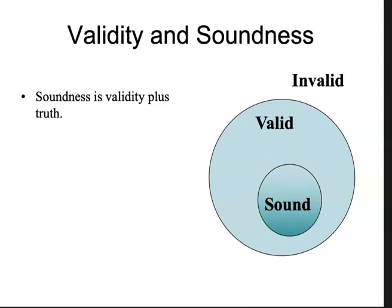What is soundness? Soundness is validity plus truth. Validity is that property that if the premises are true, the conclusion must also be true, or there's no way for the premises to be true and the conclusion false. But that doesn't necessarily mean that the premises are true — it just means that we're not going from truth to falsity.